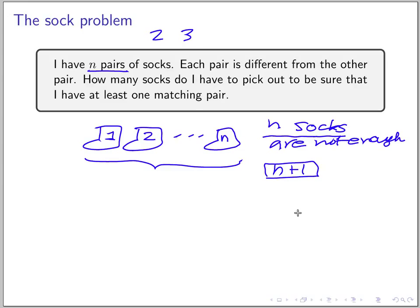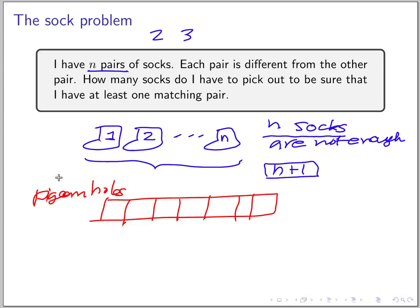So basically you have n socks, n pairs of socks, and then you have the pairs. These would be the holes, the pigeonholes, so you have n of them.